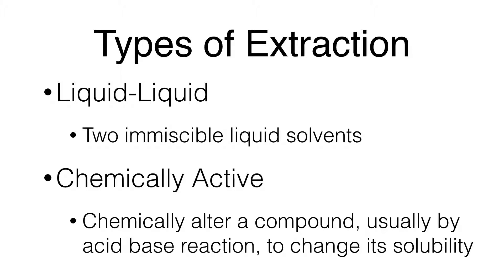There are two main types of extraction: liquid-liquid and chemically active. In liquid-liquid extraction, we use two immiscible liquid solvents, whereas in chemically active extraction, we actually chemically alter a compound, usually by an acid-base reaction, to change its solubility. In this video, we're focusing mainly on liquid-liquid extraction.